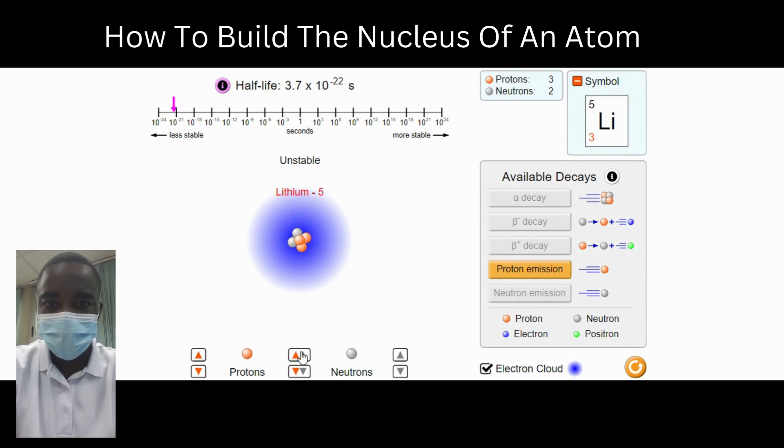The number of protons in the nucleus dictates what element the atom is. For example, all atoms with six protons in their nucleus are carbon atoms.